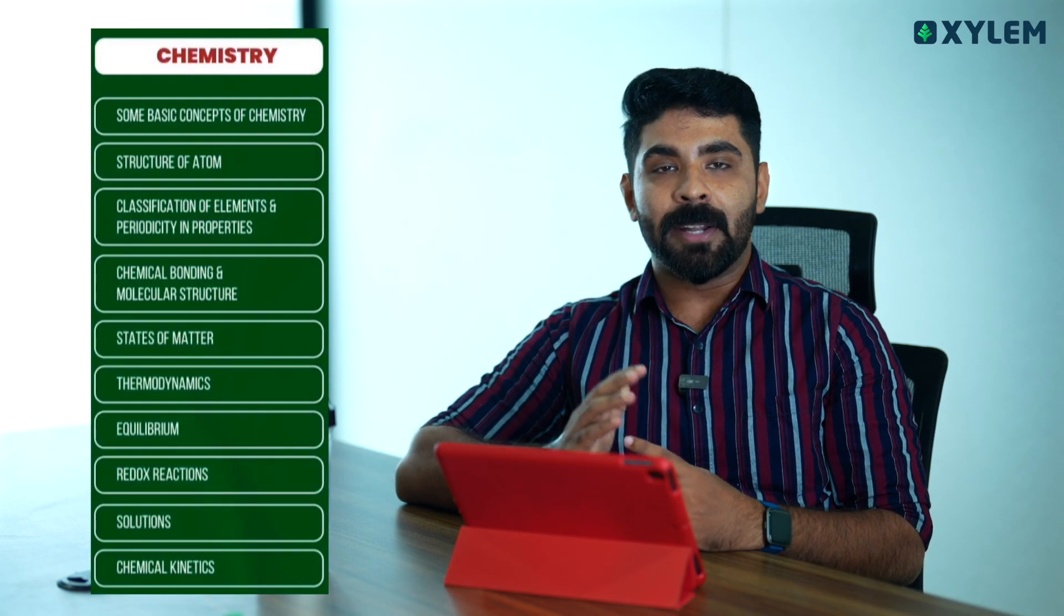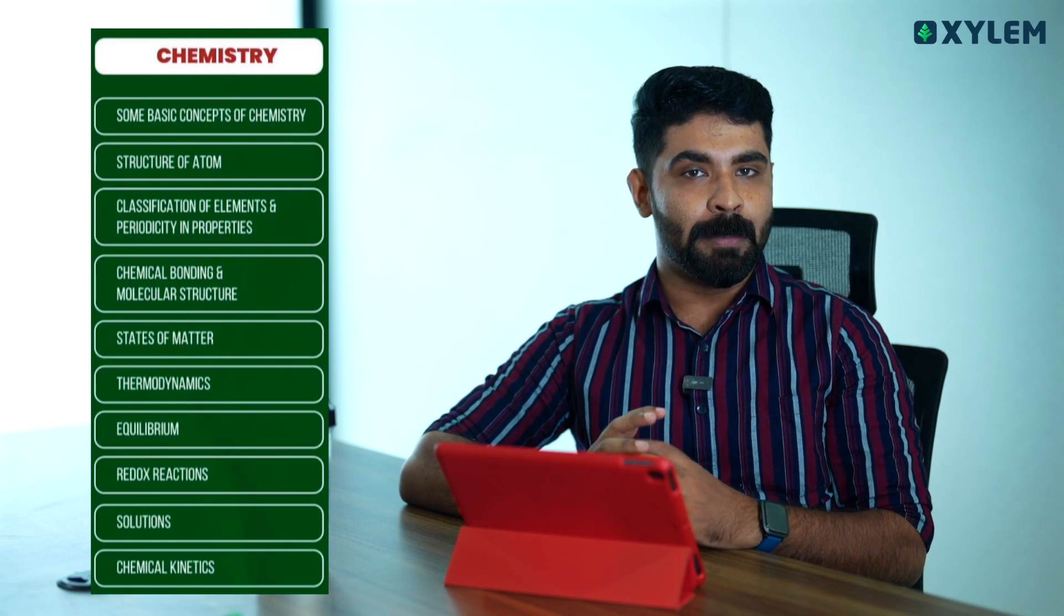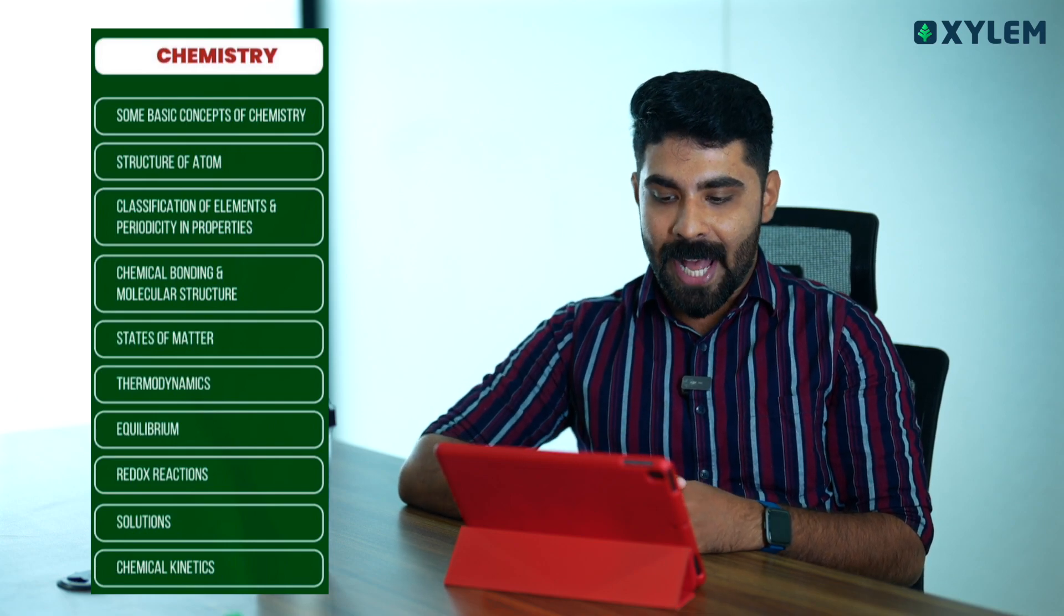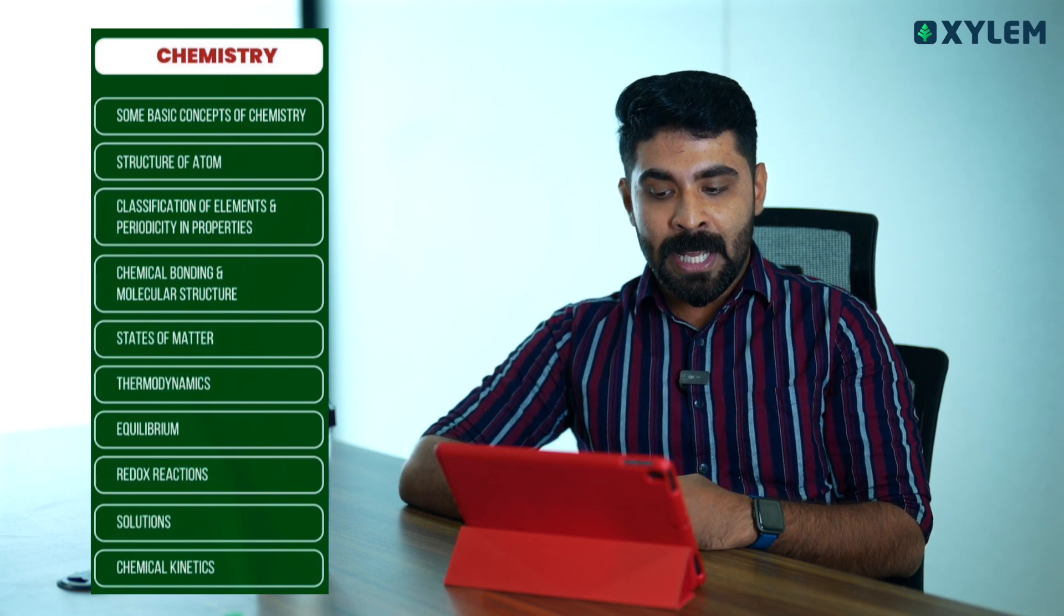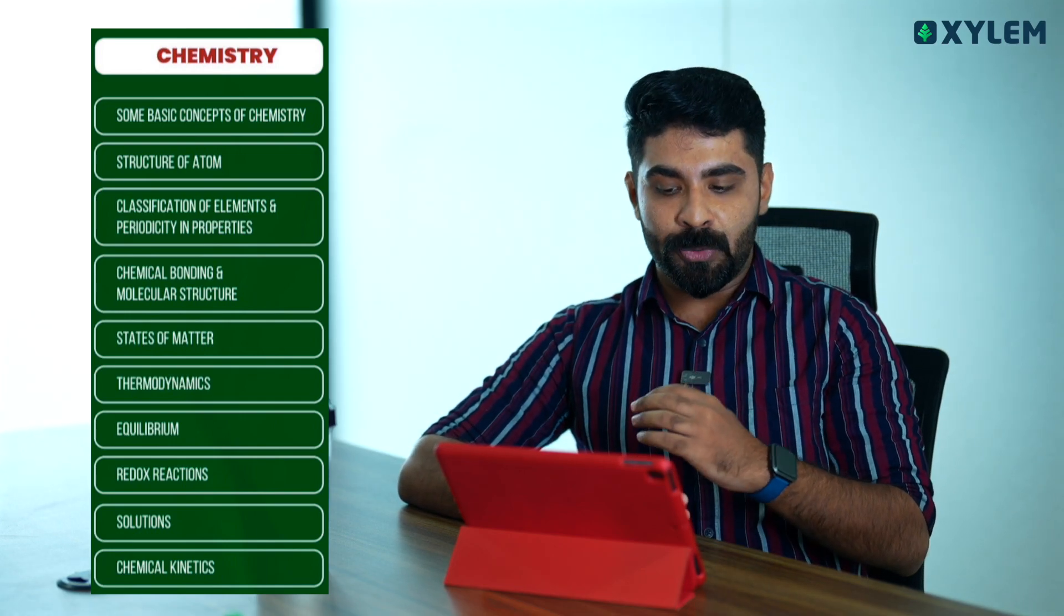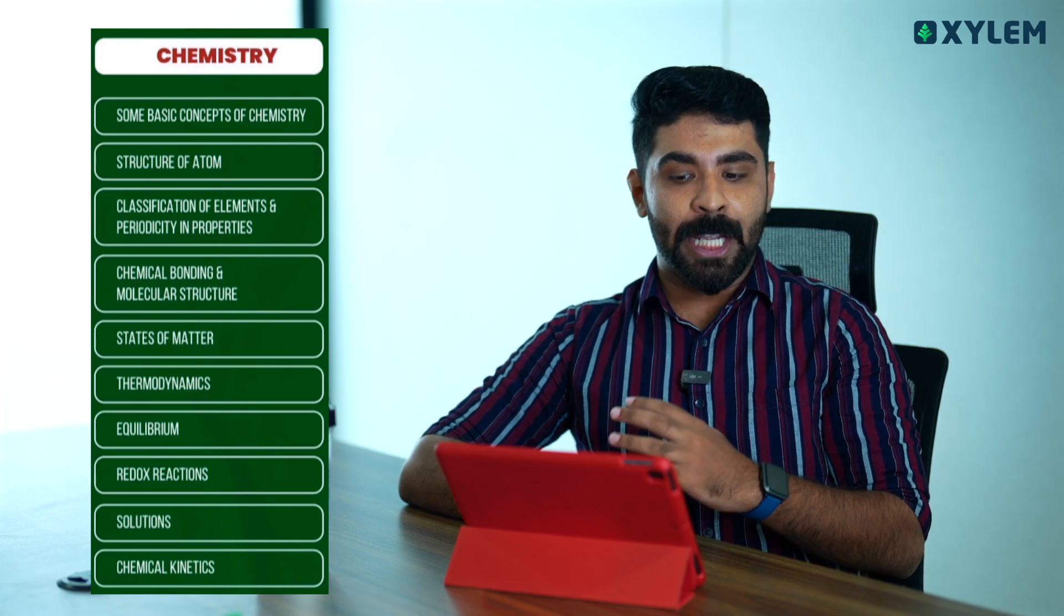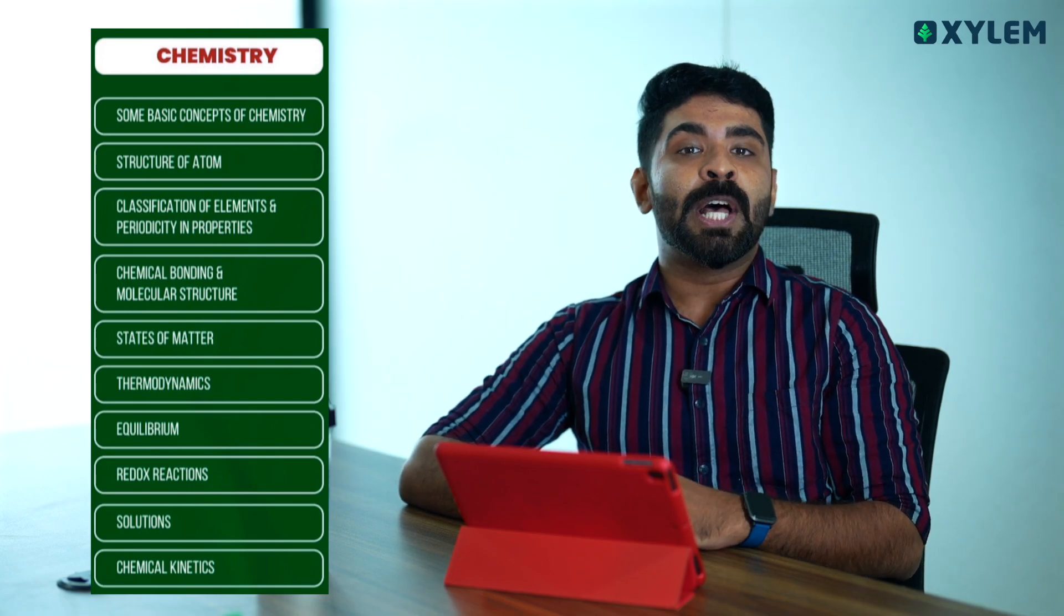That's why we need to learn about this chapter in chemistry. There are some basic concepts of chemistry, structure of atoms, classification of elements and periodicity in properties, chemical bonding and molecular structures, states of matter, thermodynamics, equilibrium, redox reactions, solutions, and chemical kinetics.